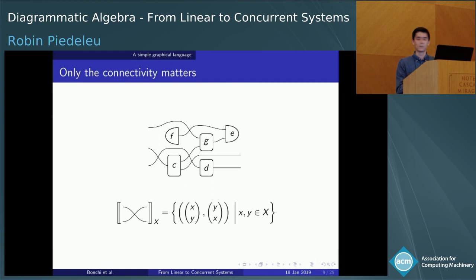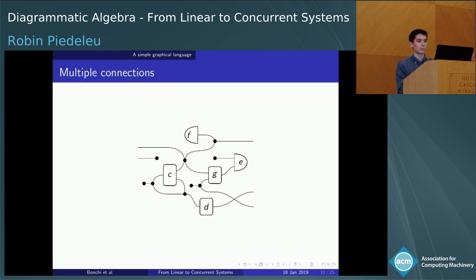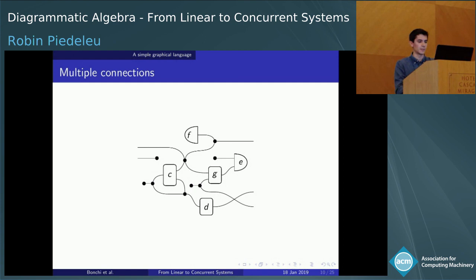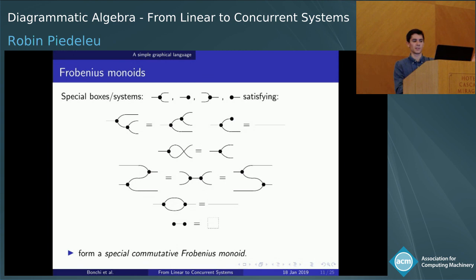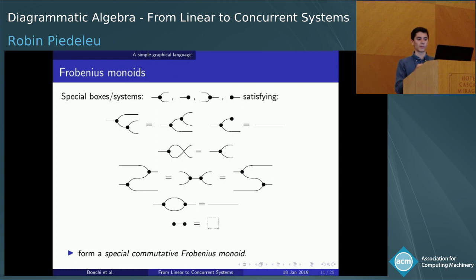We'll want more than this. Because we're interested in distributed systems and concurrency, we want to form more complex networks where channels may connect more than two systems together, or none at all if we want to delete some part. Our diagrammatic language should reflect this by allowing us to draw hyper-edges. It turns out we can give ourselves a few special boxes representing simple synchronizing mechanisms that satisfy algebraic laws characterizing the theory of special commutative Frobenius monoids.